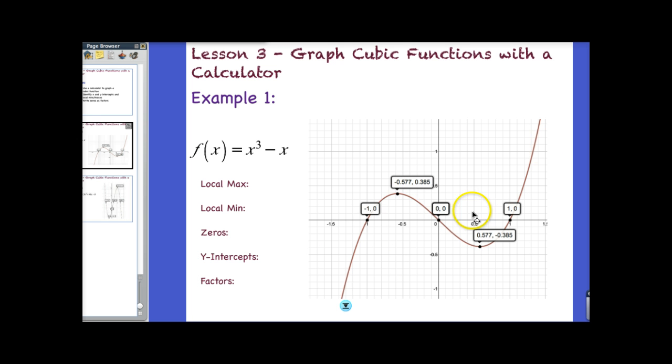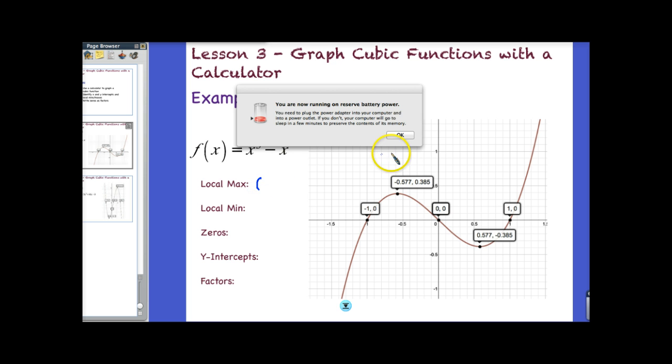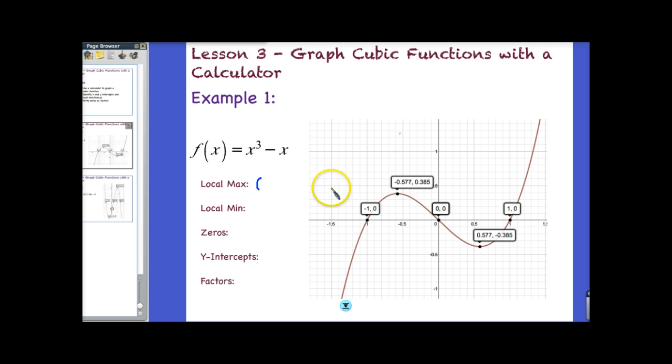Okay, so if we go back over, here's what I have recorded. So now you know what our local max is. It's basically a turning point. It's the turning point that's the maximum, or one of the maximums, but in this case, it's the only maximum. So I'm going to go ahead and write in that turning point. So my local maximum is, and you can round. So my local maximum is negative point, and I'm going to go ahead and round to the hundredths place. So 0.58 comma 0.39.